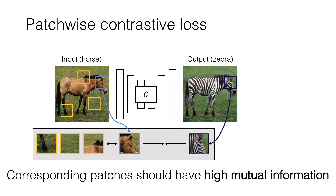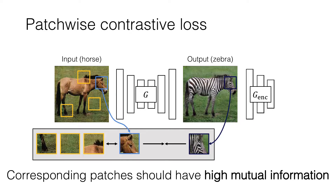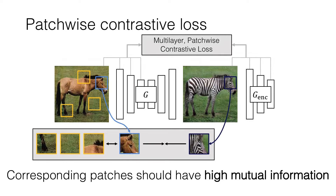In this work, we formulate this intuition as a multi-layer patchwise contrastive loss, and combine it with a standard discriminator. Our final objective has just these two losses.